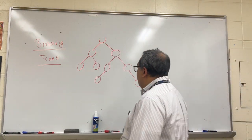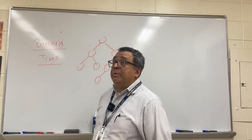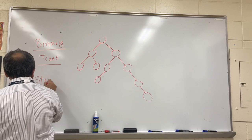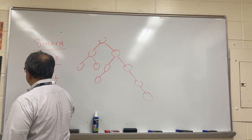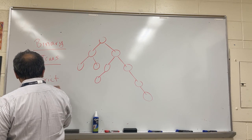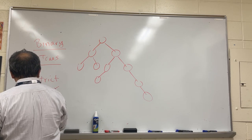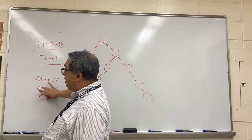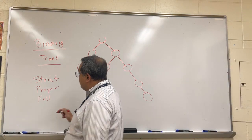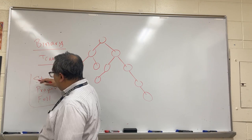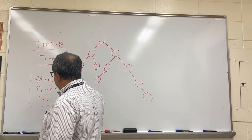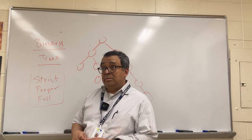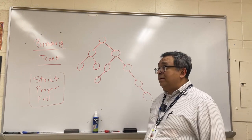The first definition is something called a strict binary tree, which also has the synonyms proper binary tree or full binary tree. This term is extremely misleading - the other terms are better to use - but all three mean the same thing. Basically, it means that every node has exactly zero or two children.